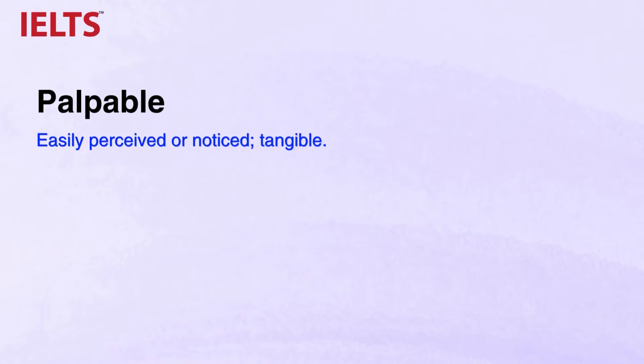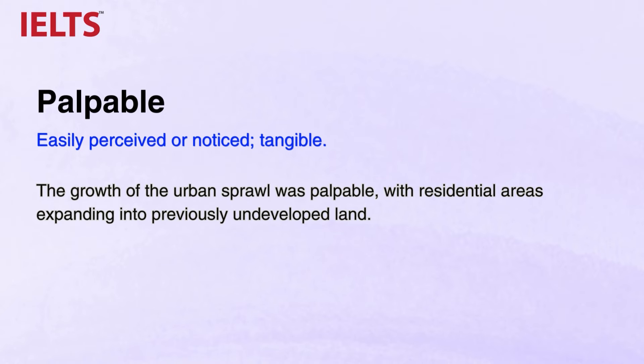Number eight in the list: PALPABLE, meaning easily perceived or noticed — tangible. The growth of the urban sprawl was palpable, with residential areas expanding into previously undeveloped land. Kind of similar to the last adjective we learned. Use this adjective to describe changes or features that are easily perceivable or tangible on the map.